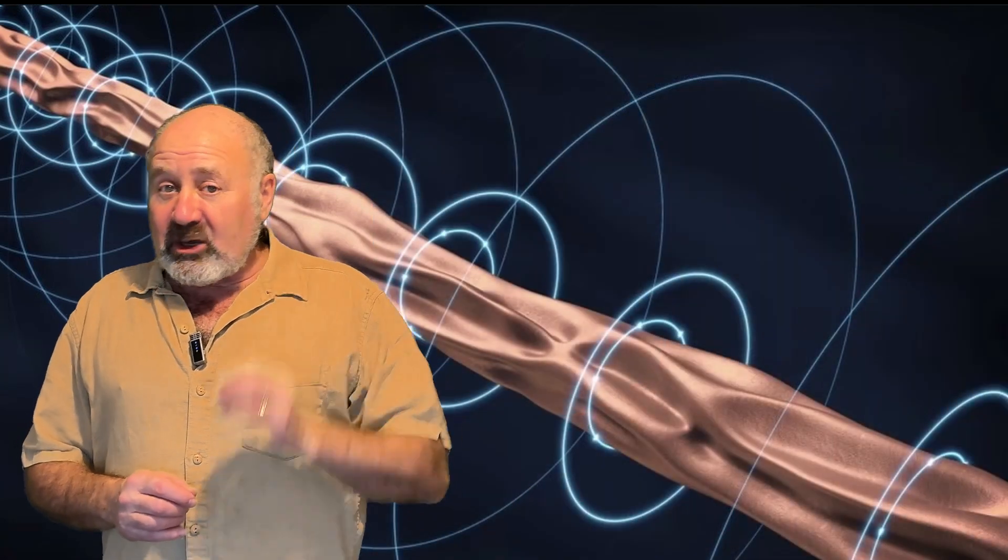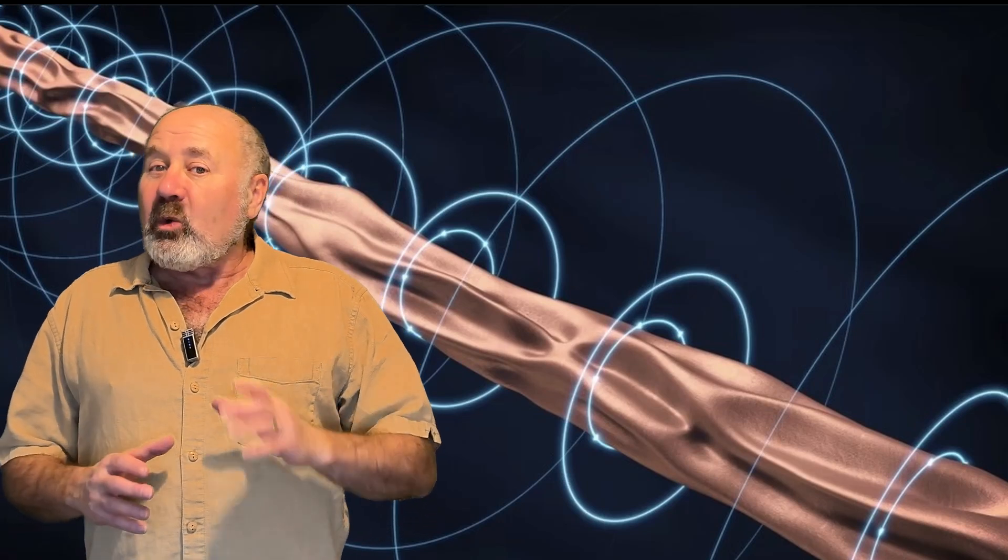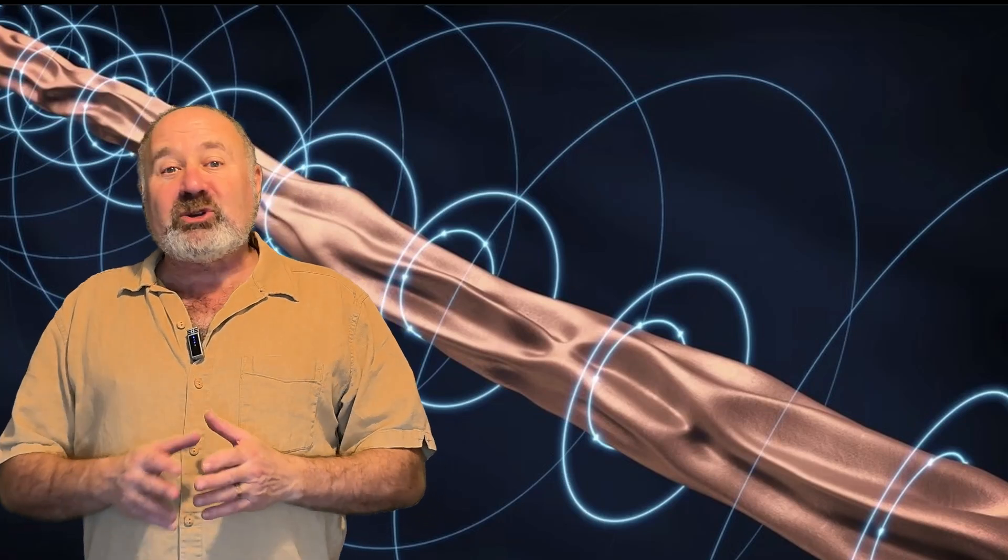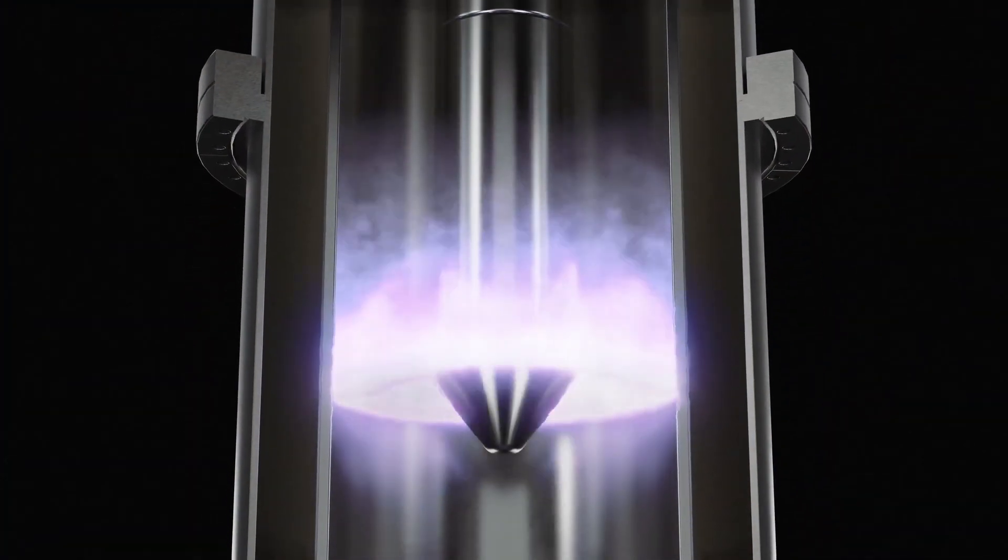But the idea didn't completely die, and Dr. Yuri Shumluk at the University of Washington had the idea of shear flow stabilization. Rather than just a single current running down the center of the plasma, a cylinder of currents, which are moving at different speeds as you move away from the center, would prevent the bubbles of plasma leaking away.